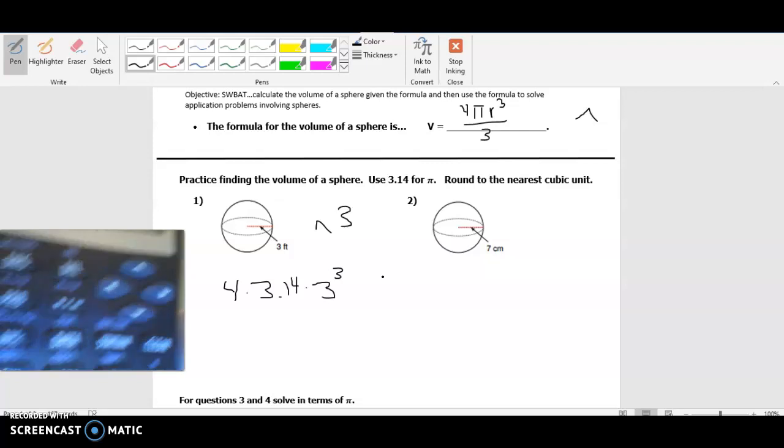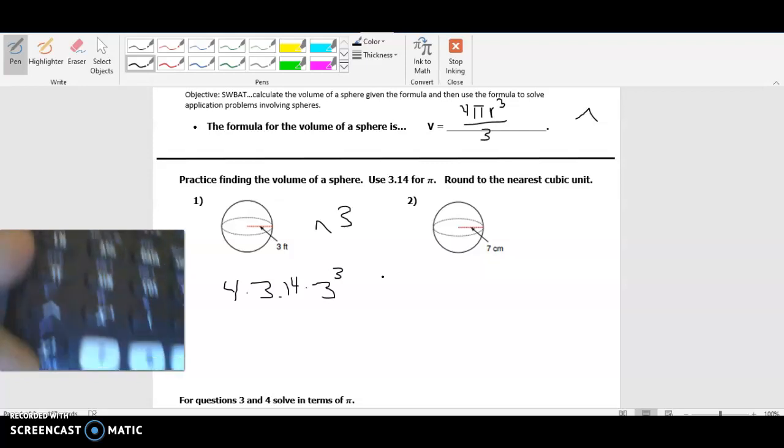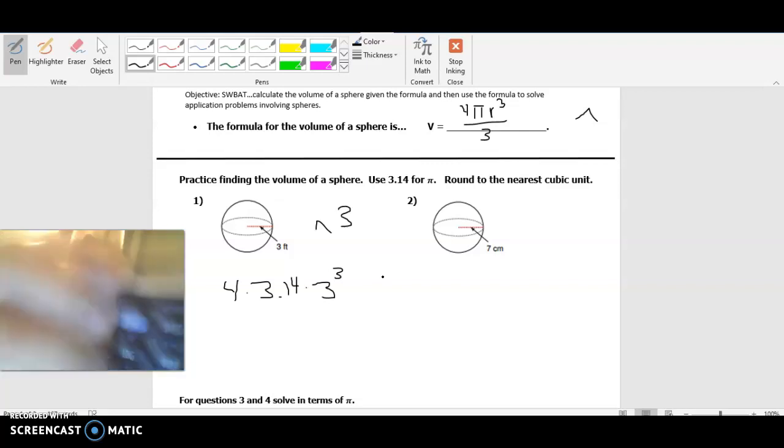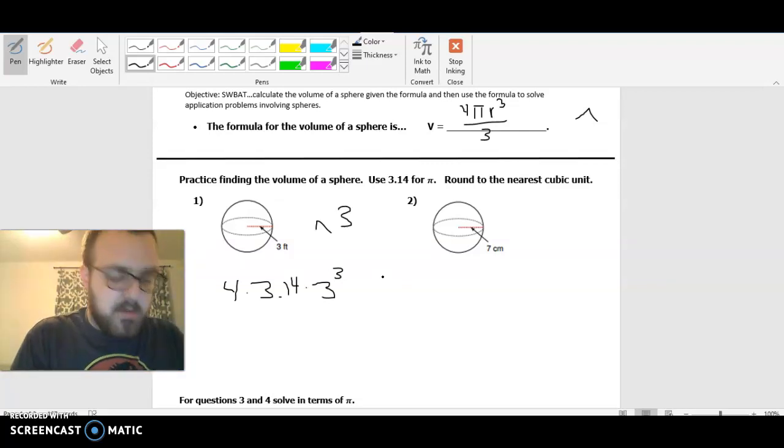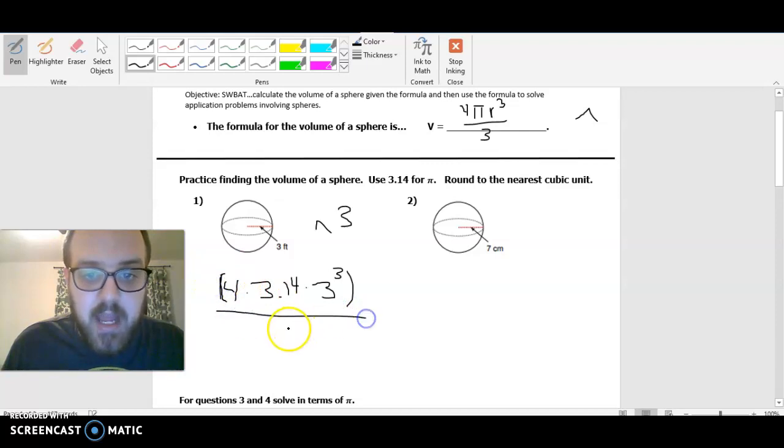And again, if you're looking for where that button is, the button is right there underneath π, that caret button located right there. So what we're going to do is we're going to plug that in and then again, put this entire thing in parentheses when I plug it in my calculator. So put this whole thing in parentheses and then divide it by 3. And that's going to go ahead and give us the volume of the sphere.